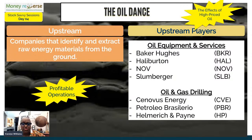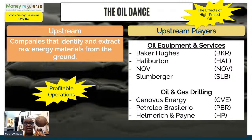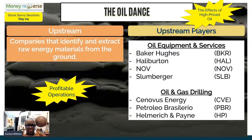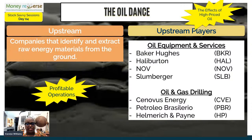Some examples of upstream companies I think would be most profitable are those doing the drilling: Baker Hughes, Halliburton, NOV (used to be National Oil Well Varco), and Schlumberger. These are energy and drilling companies that actually have rigs in the ground. Also Cenovus Energy — a Brazilian company — and Helmerich & Payne. These companies are going to make more money with every barrel of crude they sell as they pull it out of the ground.